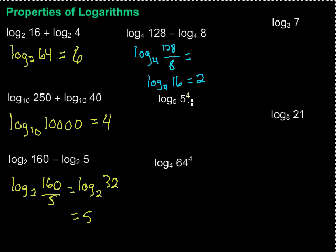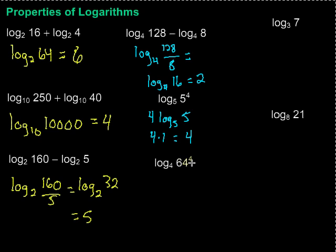Alright now this next one I have got that power situation. And remember what I can do if I have that power is pull it out in front. So I have 4 times the log base 5 of 5. Well the log base 5 of 5, can I simplify that? Yes I can. 5 to the first power would get me 5, so this whole thing just becomes 1, and I have 4 times 1 which is of course just 4.